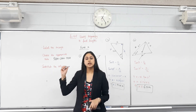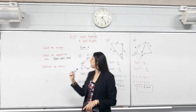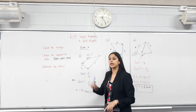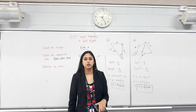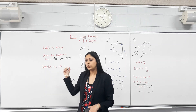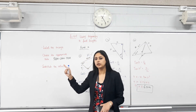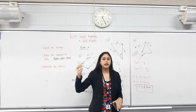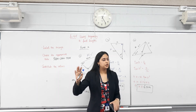We've only done questions where the unknown was in the numerator. Next lesson we'll deal with questions where the unknown is in the denominator — so that'll be part two. Any questions? What are the three steps? Label, choose the ratio, substitute. And what should be written on every page for your trig work? SOH-CAH-TOA. Well done — get on with your work.